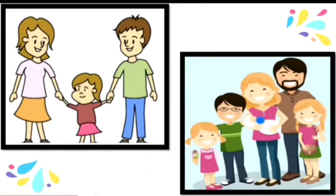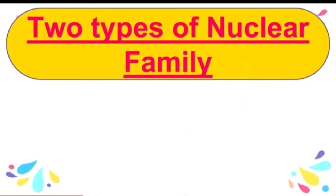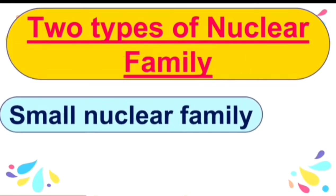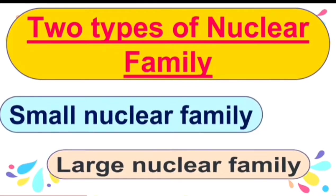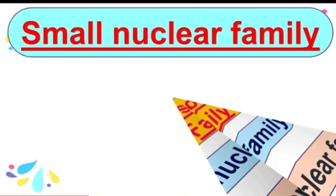Here you can see both the families — they are nuclear families, because they have parents and their children. There are two types of nuclear family: number one, the small nuclear family, and number two, the large nuclear family.